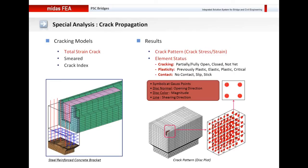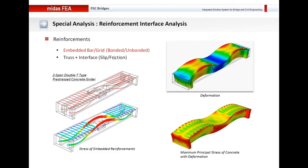You can model the crack material in Midas FEA. We have the total strain crack model available that can be used to study crack propagation in an element, and here is how you can obtain the results for cracking. You can also perform reinforcement interface analysis in Midas FEA — you can define the interface material for the reinforcement and see what is the slip or friction and how they are interacting.